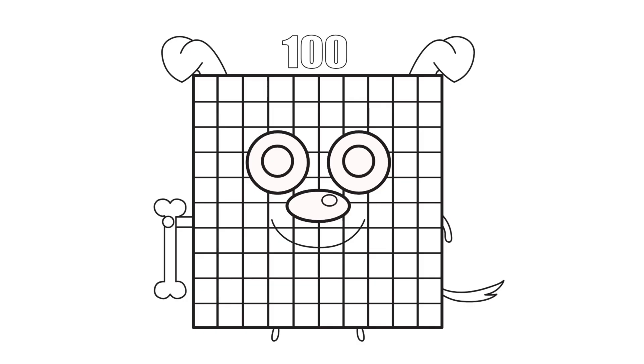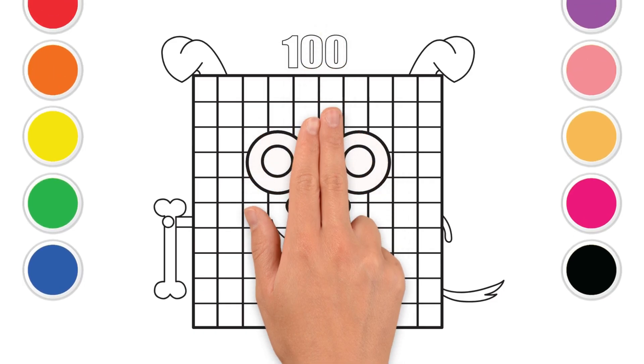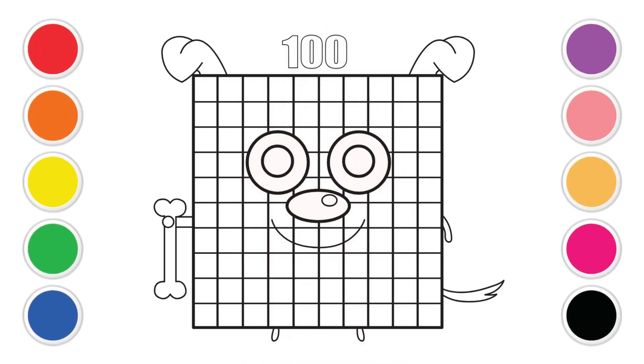It's time for some color. Let's bring our giant number block to life. Let's start with the color black. That's B, L, A, C, K. Black.